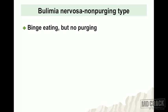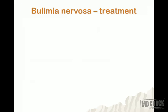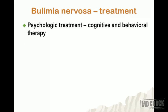Bulimia nervosa non-purging type is the second subtype. There is binge eating but no purging; instead, other compensatory mechanisms such as hypergymnasia are used. That is the defining feature of bulimia nervosa non-purging type — the absence of purging behavior.